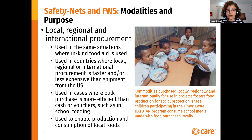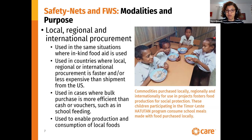In many countries, such as those in East Africa or Asia, it can take anywhere from four to six months to ship food from the U.S., and it also takes a long time to procure the food within the U.S. Local, regional, and international procurement moves food more quickly, usually cutting down the shipping time by several months, making it easier and more available for use. It is also used in cases where bulk purchase is more efficient than cash or vouchers, such as in school feeding.